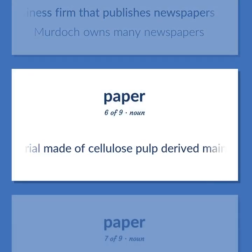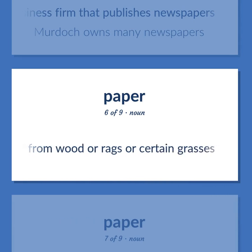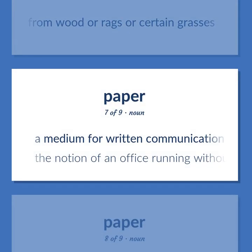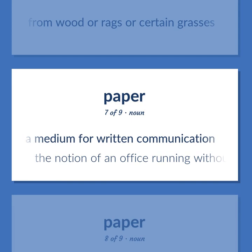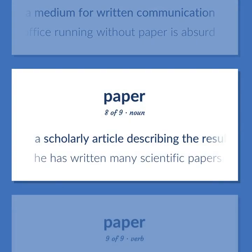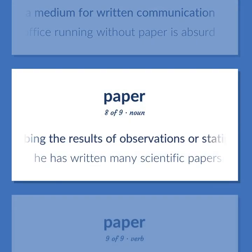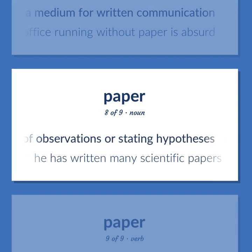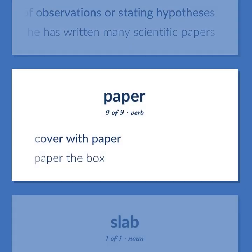Paper: a material made of cellulose pulp derived mainly from wood, rags, or certain grasses. A medium for written communication. The notion of an office running without paper is absurd. A scholarly article describing the results of observations or stating hypotheses. He has written many scientific papers. Cover with paper. Paper the box.